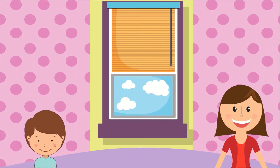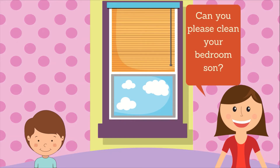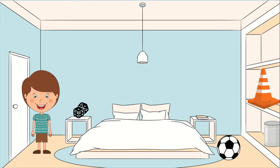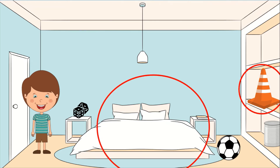This is Tom and his mother. He was asked to clean his bedroom. So Tom went to his bedroom, and as he was cleaning, he saw objects: a traffic cone, his bed, some dice figurines, a soccer ball, and a coin bank can.